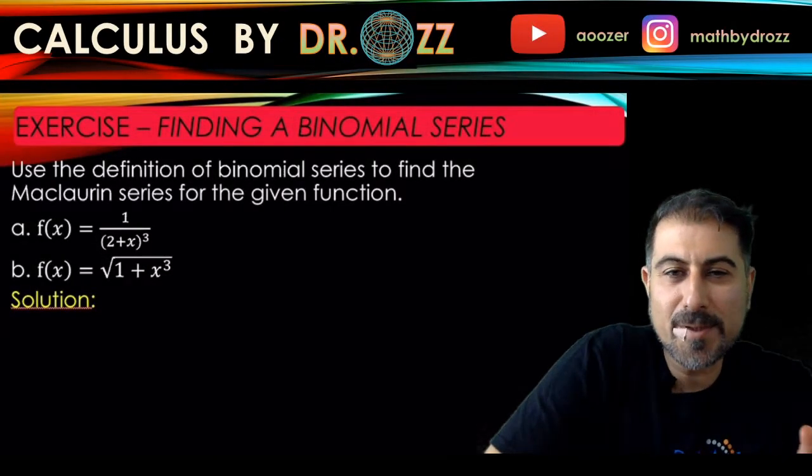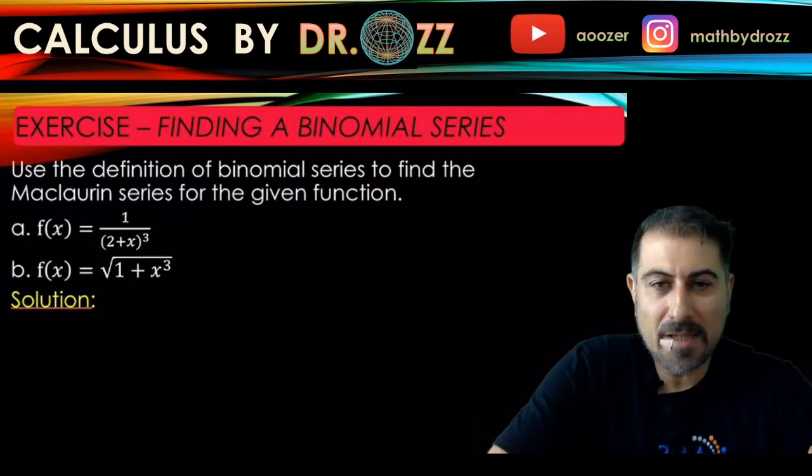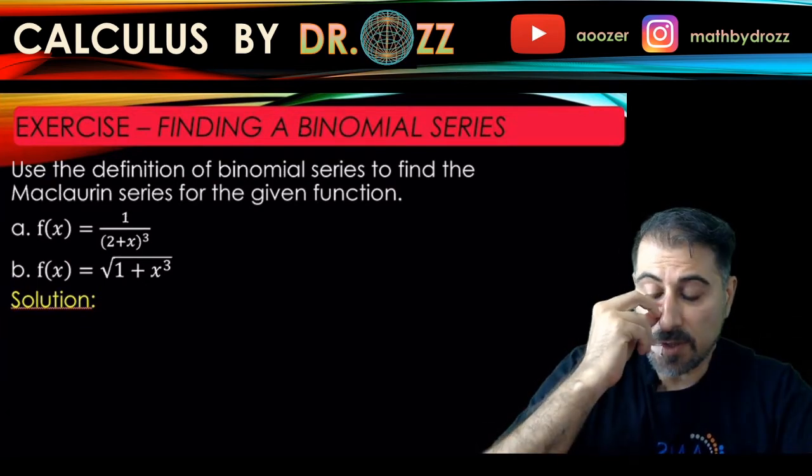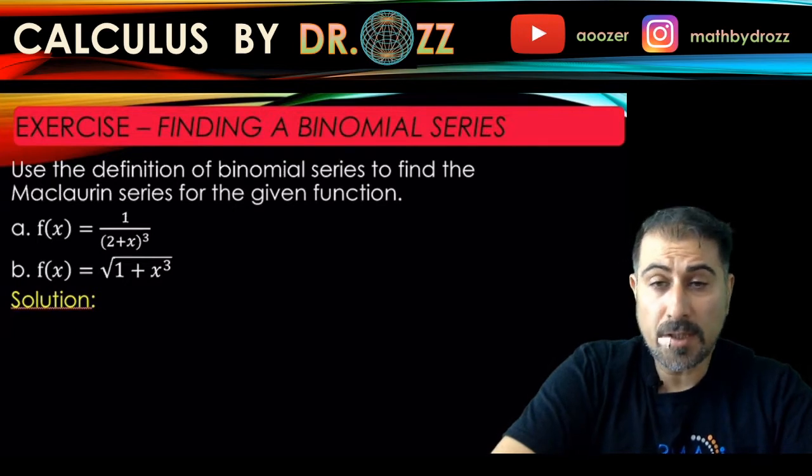We're going to use the definition of binomial series to find the Maclaurin series for the given function. So we have f(x) equals 1 over (2 + x) quantity cubed in the first case, and in the second case we have radical 1 plus x cubed.